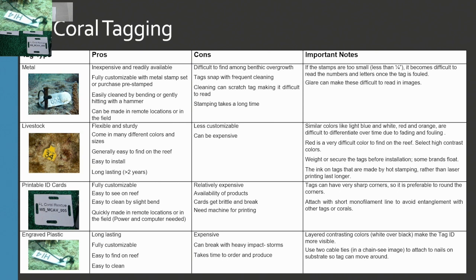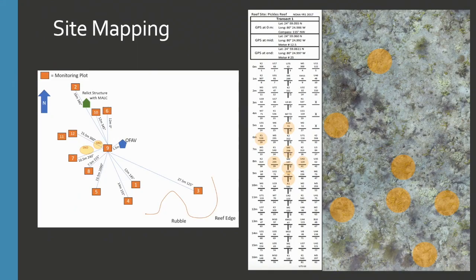We also provide information on how to tag your corals, bringing together what has been used in the field. We look at pros and cons and important notes for each tag type. For example, livestock tags — people have found that certain colors work well, but UV breaks down other colors over time, so reds and pinks can both fade to the same white coloration, leaving you unable to distinguish them. We also provide information on how to map your corals and track them over time without tagging every single coral, with guidance, examples, and case studies on how to monitor and map outplant sites.